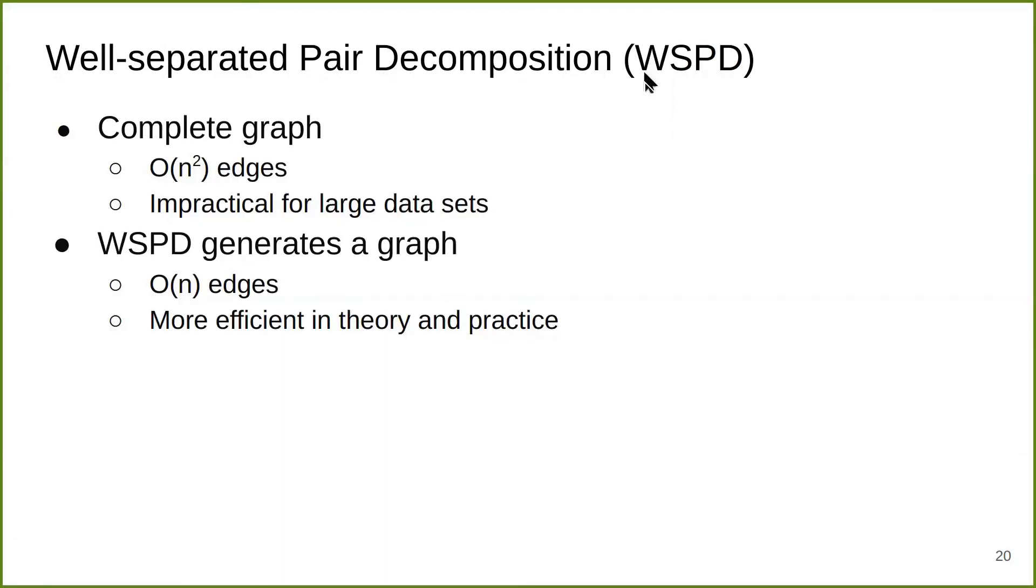For well-separated pair decomposition, we use a strong-form WSPD. Previously, as mentioned in the definition, we need to construct a graph of quadratic number of edges, which is impractical for large datasets. The reason we want to use this WSPD is that it generates a graph of only a linear number of edges, which is more efficient in both theory and practice.